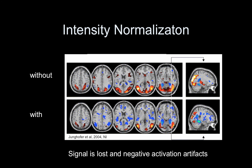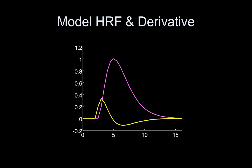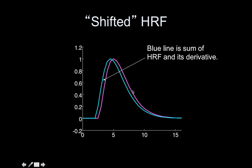The reason this problem occurs is that there's widespread activation and the normalization is basically removing that activation. Regarding other modeling considerations: adding the derivative of the hemodynamic response function and adding motion parameters to the model. Here is an illustration of the HRF and its derivative. If you take a linear combination of these two functions — multiply a number times the yellow time course and add it to some number multiplied by the pink one — you get the blue line, which is the sum of the HRF and its derivative using weights of one. This creates a shifted version of the HRF.